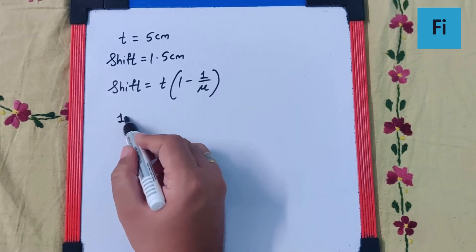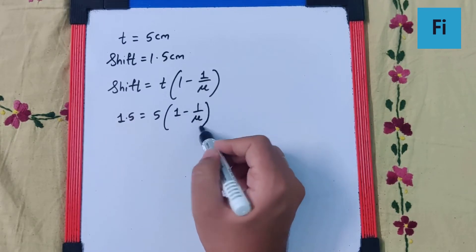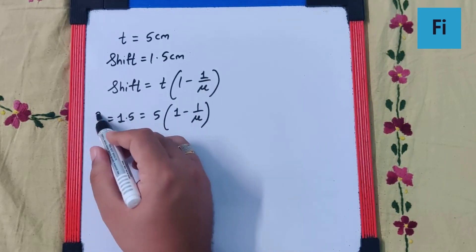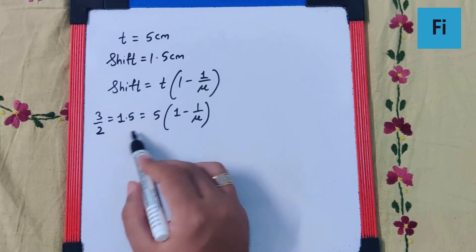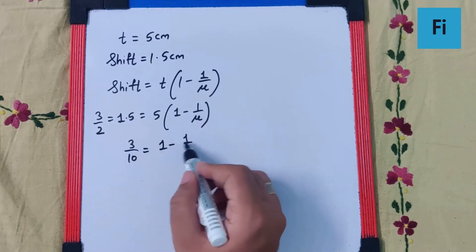So 1.5 equals 5 times 1 minus 1 by mu. 1.5 is 3 by 2, so we get 3 by 2 equals 5 times 1 minus 1 by mu. This gives 3 by 10 equals 1 minus 1 by mu.